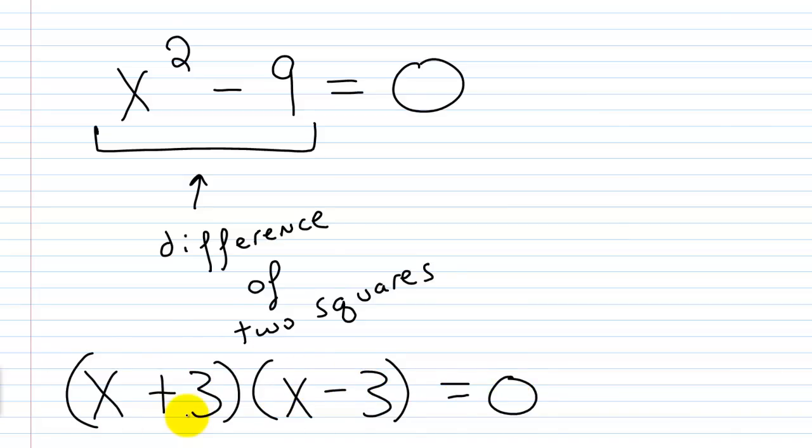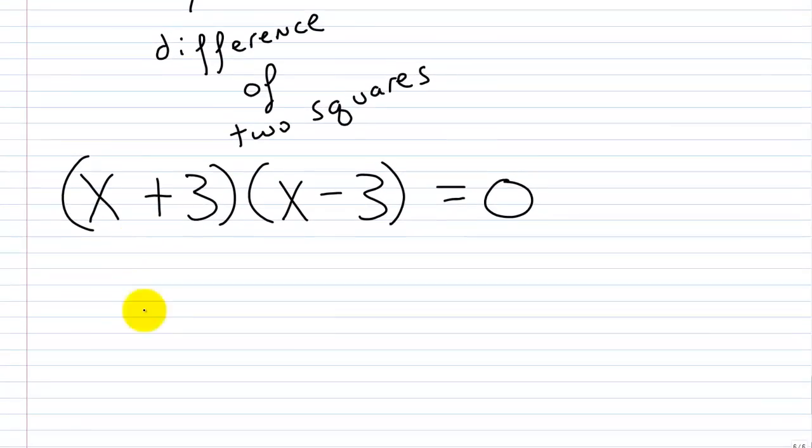And then I'm going to use my zero factor property here and set each of these factors equal to 0. So x plus 3 equals 0, and x minus 3 equals 0.